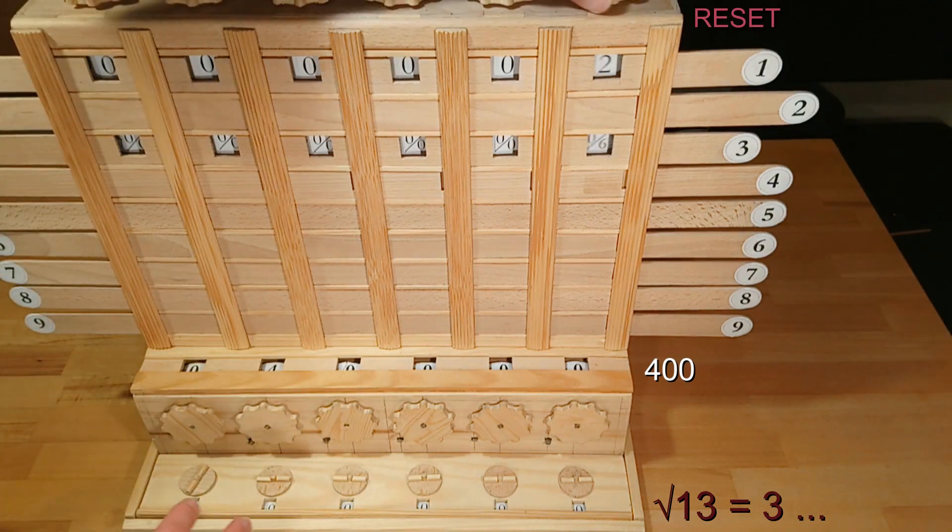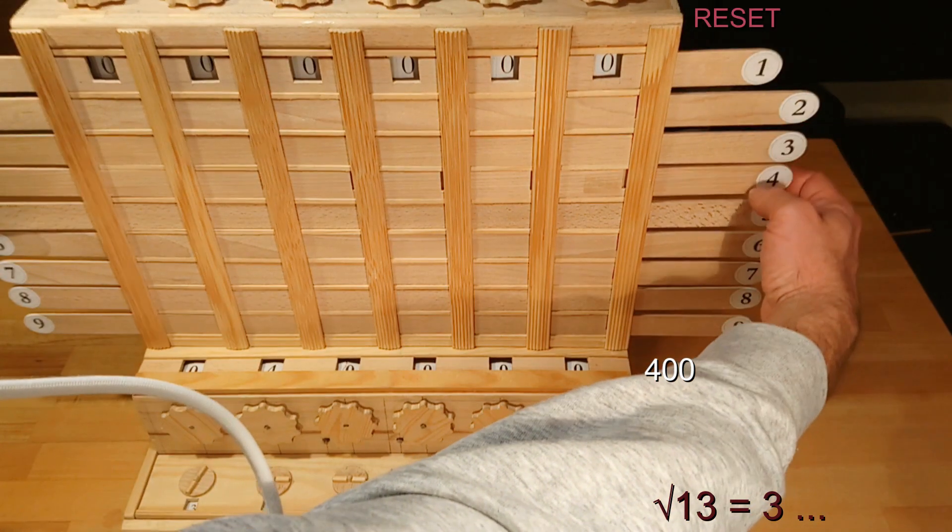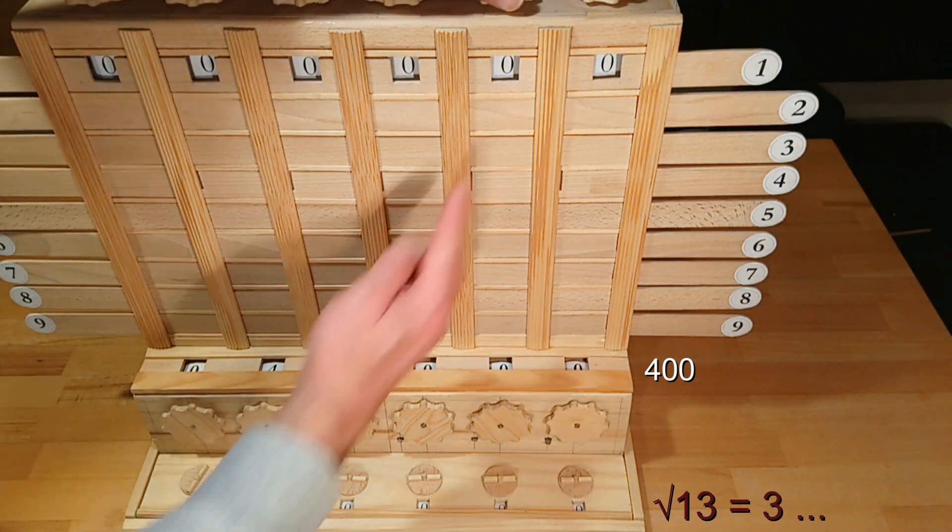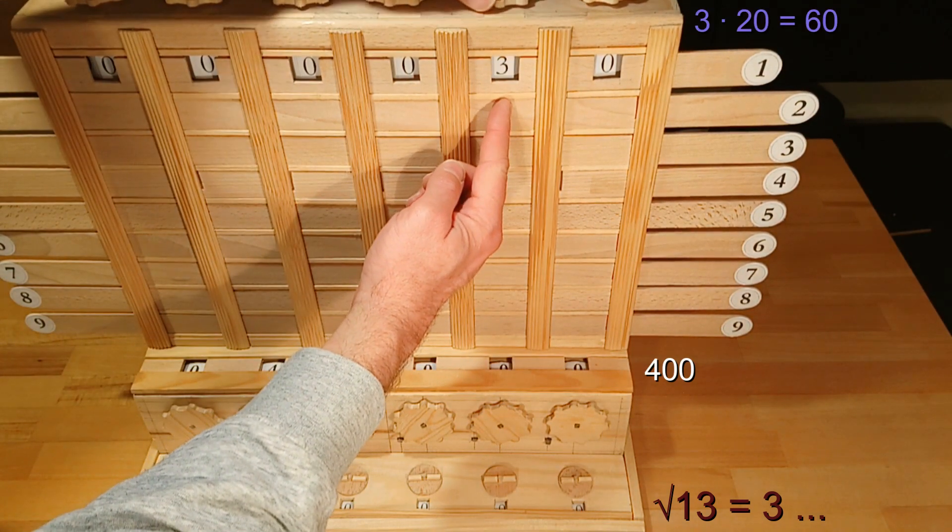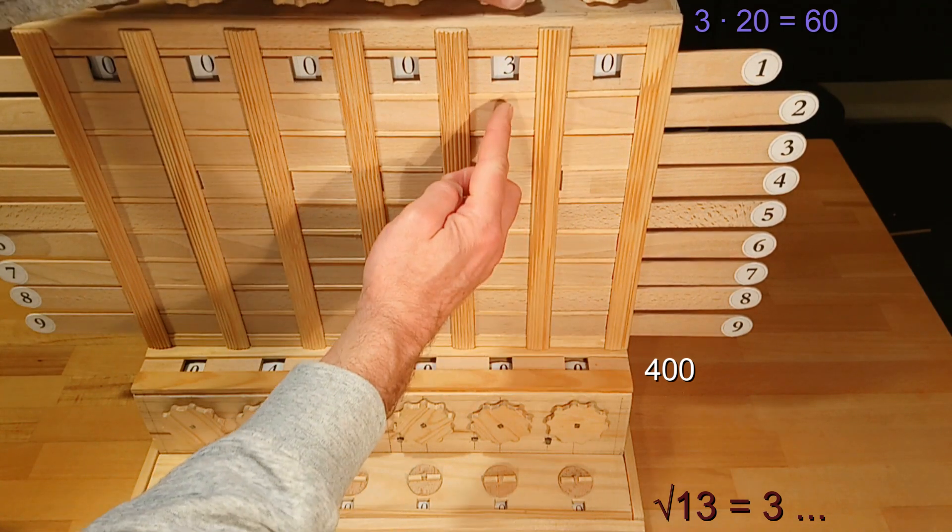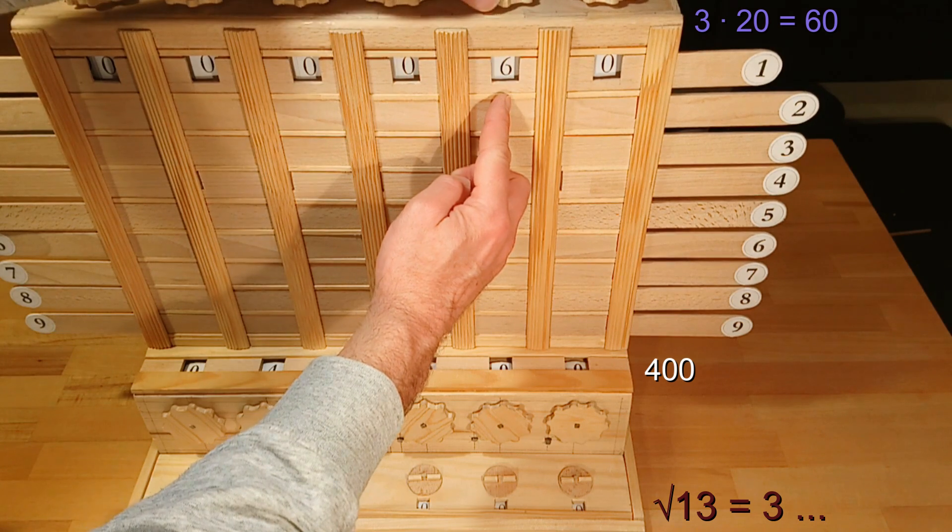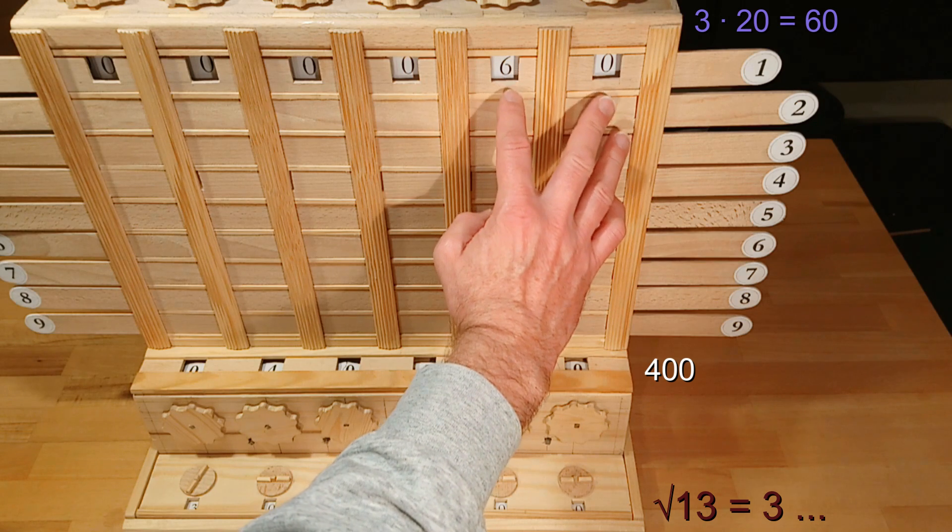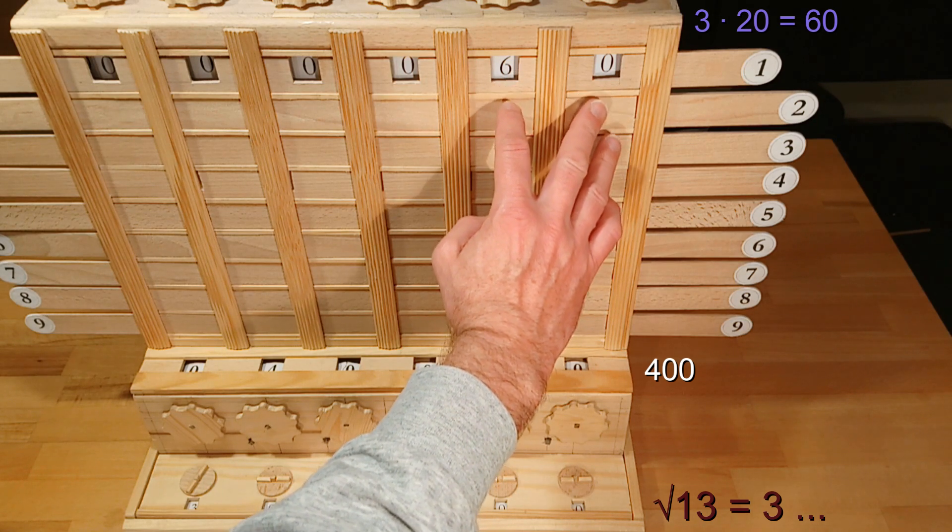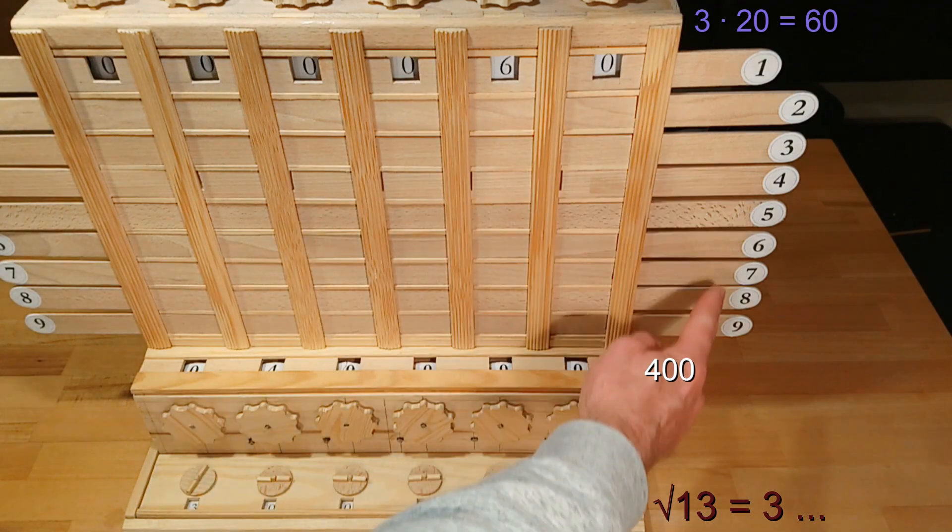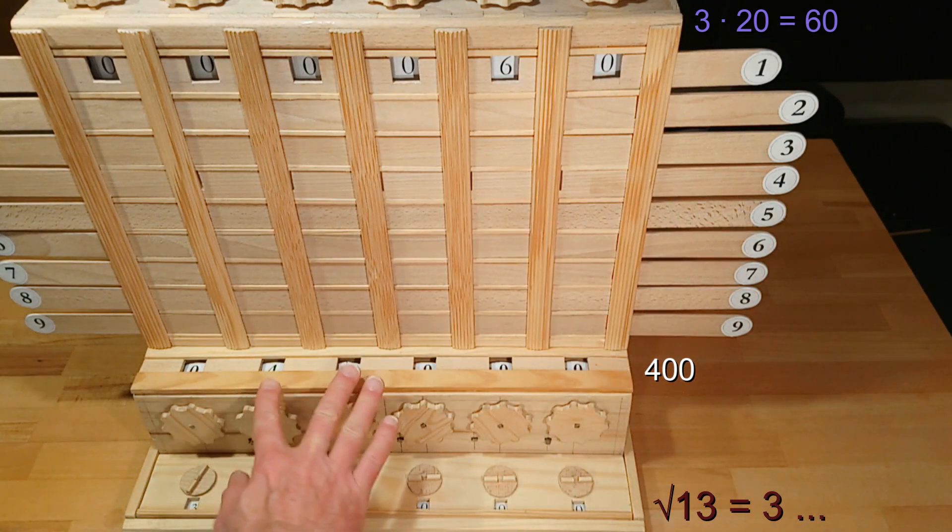I reset the multiplier to 0. Then I transfer the first result digit 3 into the multiplier F30 and multiply it by 2 because of the first binomial formula. We now have 60 in the multiplier.